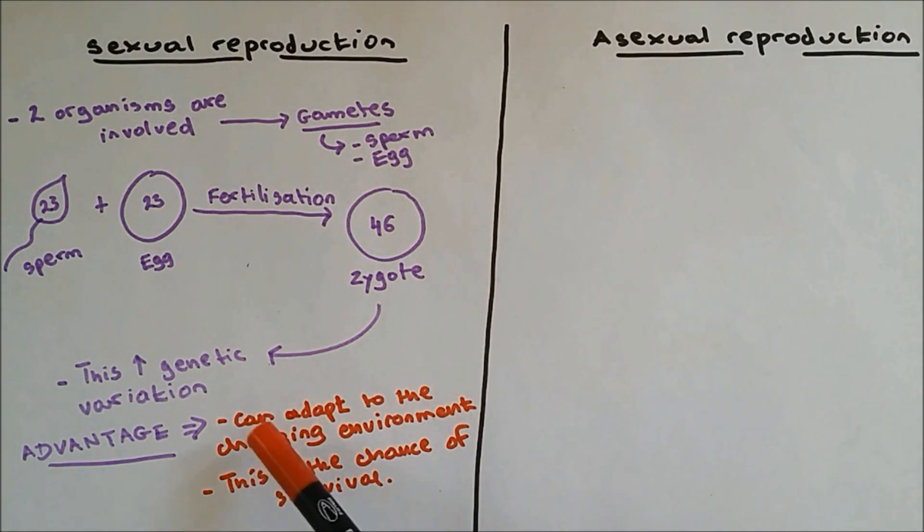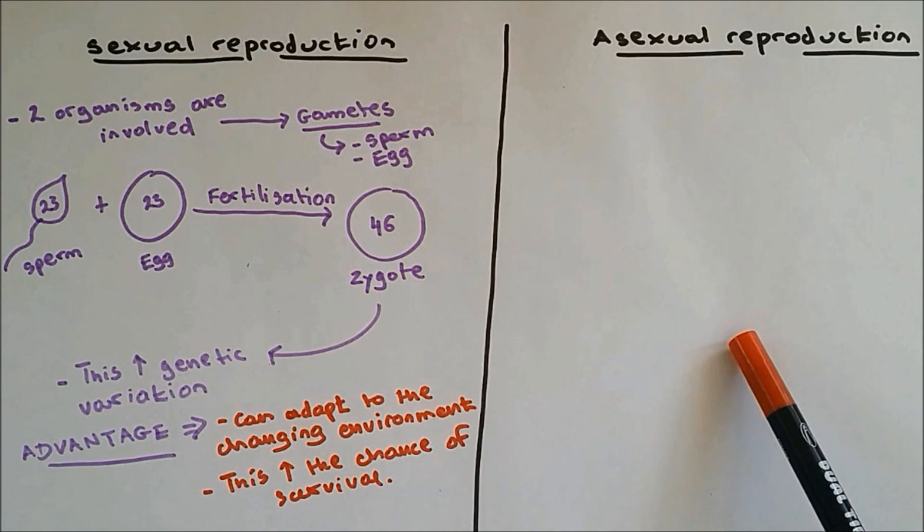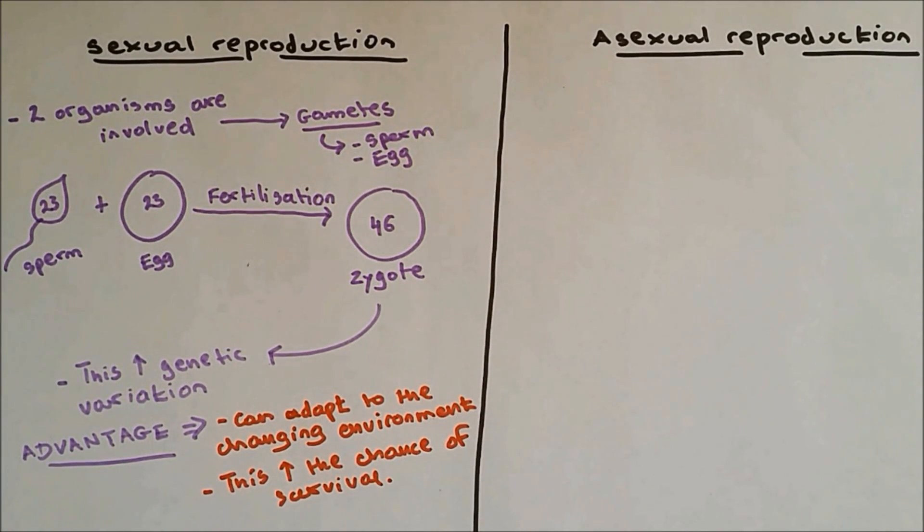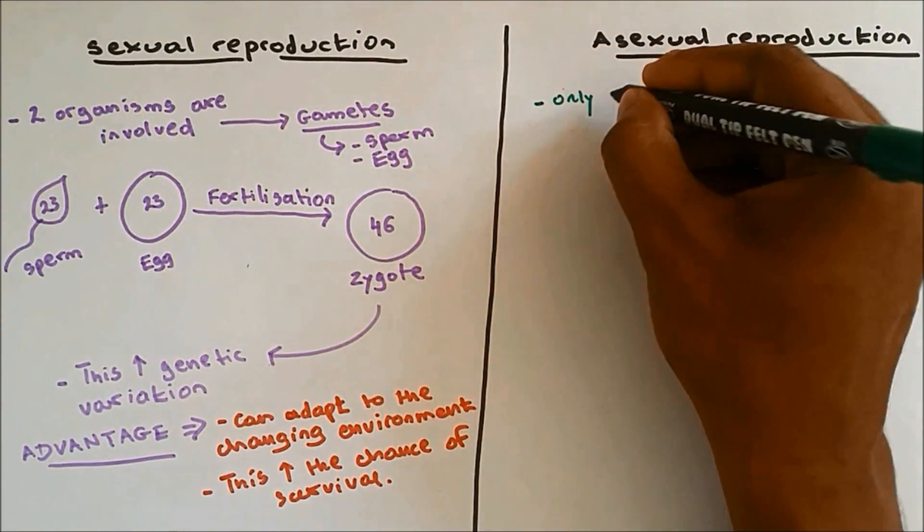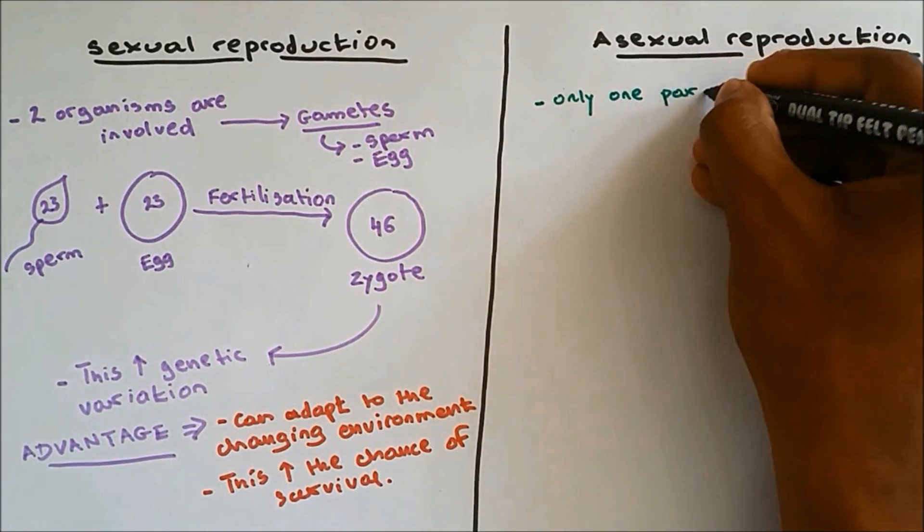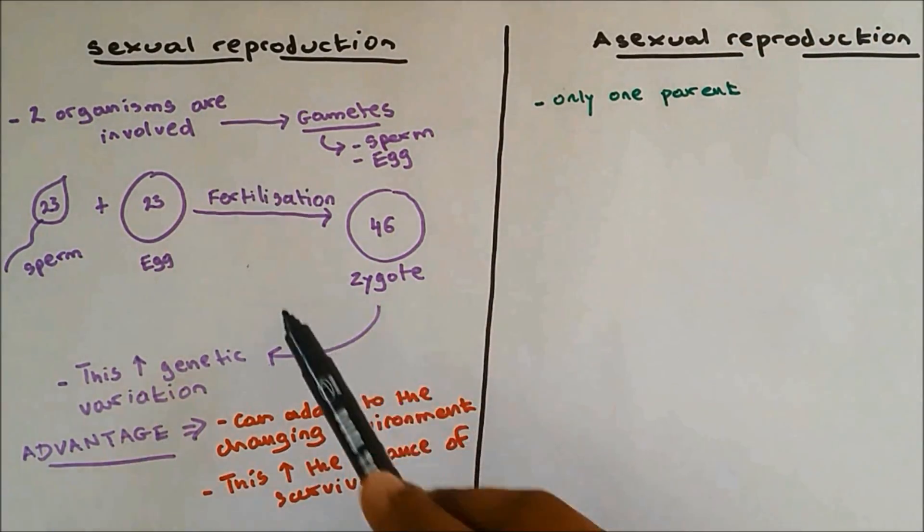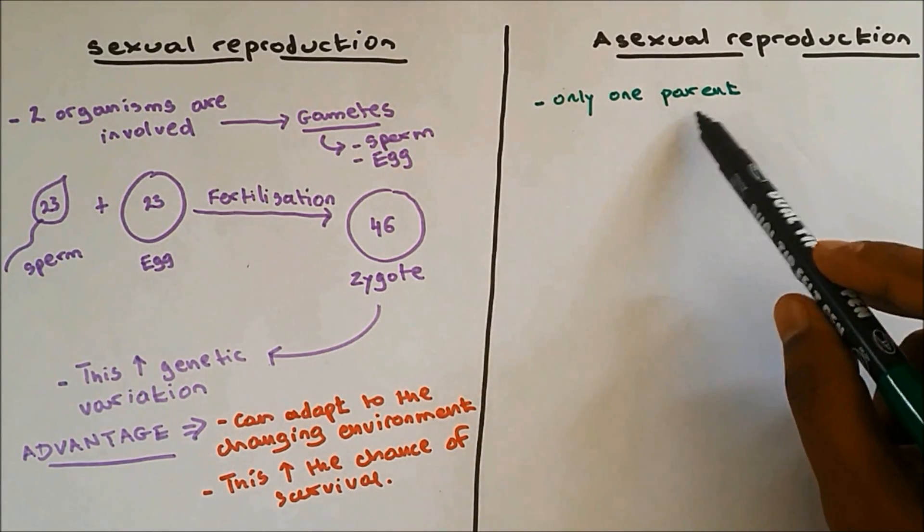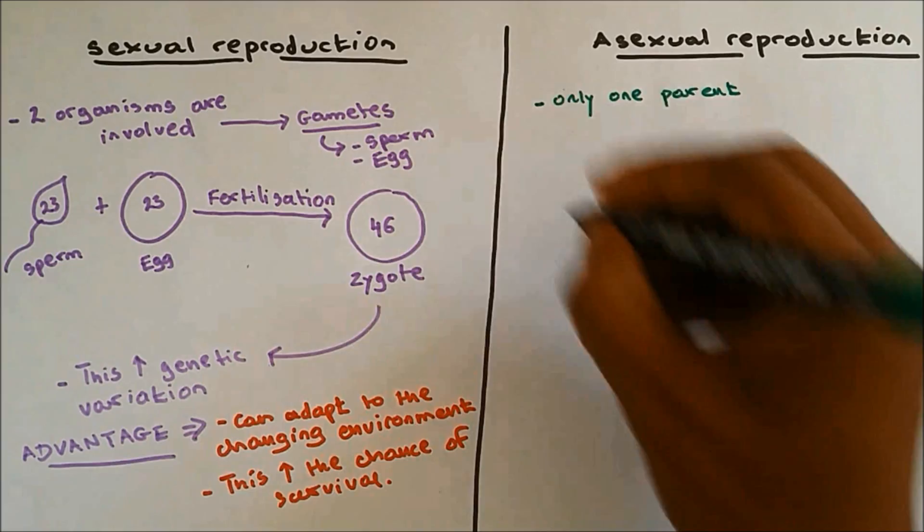Only sexual reproduction can increase genetic variation. Asexual reproduction cannot increase genetic variation. Now let's compare asexual reproduction. The word asexual means only one parent is involved in producing offspring, so only one parent. Unlike sexual reproduction where two organisms are involved, one producing sperm and the other producing egg and fusing together, over here there is no such process of fertilization.